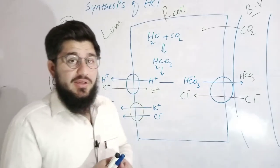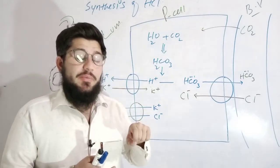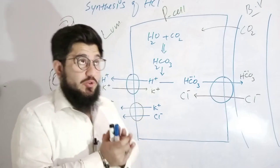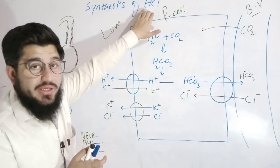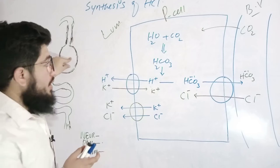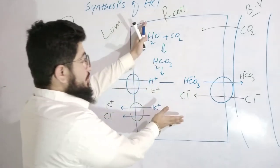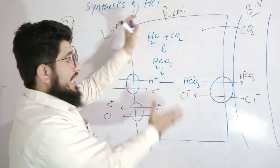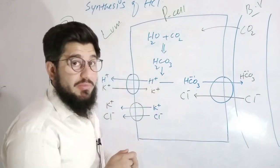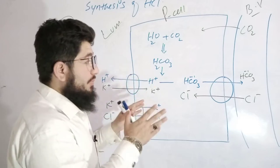There is a certain type of cell named the parietal cell. All these parietal cells are actually responsible for synthesizing hydrochloric acid, and they are located in the stomach. One of these cells is zoomed here — this is one of those parietal cells. Now, what is happening inside this parietal cell is what we need to remember.